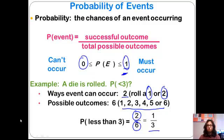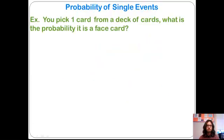Hopefully you can see why you would never have a probability greater than 1. Obviously we couldn't have more than six possible outcomes when rolling a die, because those are all the possible outcomes.